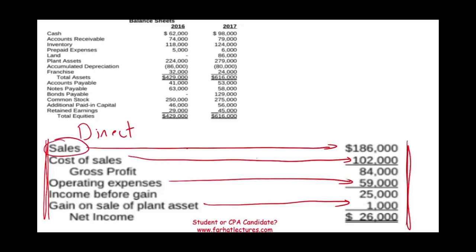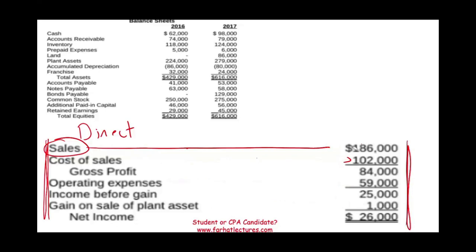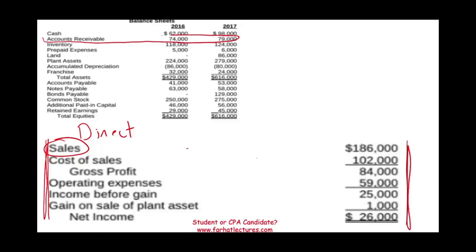Starting with sales, you would say this is my accrual sales: 186,000. What is my cash sales? How do you convert accrual to cash? What you have to do is examine the account on the balance sheet that's related to sales. Which account on the balance sheet is related to sales? The answer is accounts receivable.